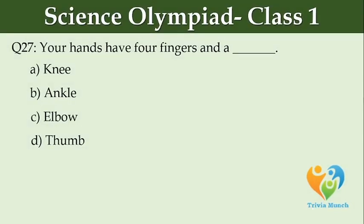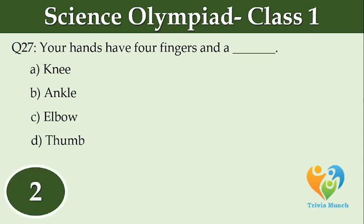Your hands have four fingers and a dash. Option A: Knee. Option B: Ankle. Option C: Elbow. Option D: Thumb.